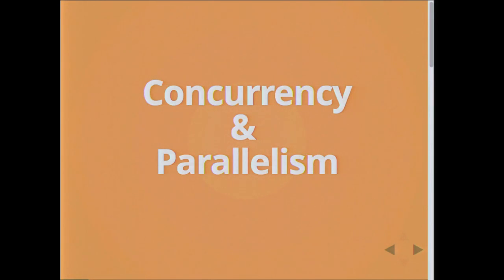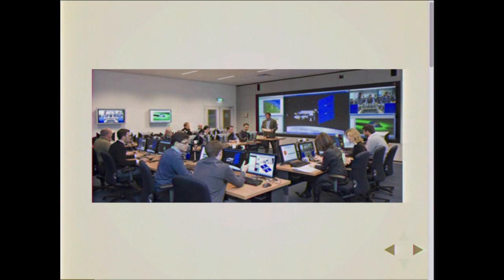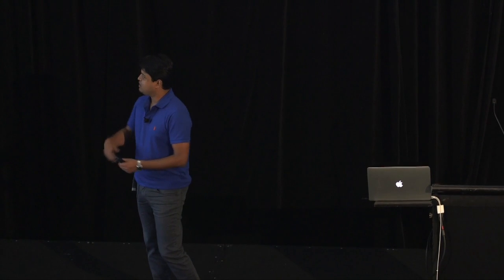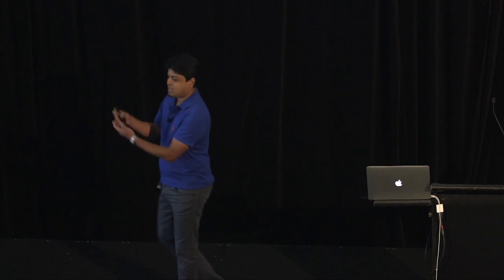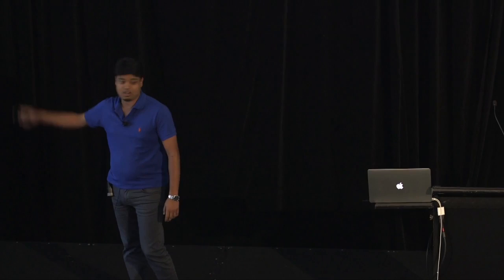So what's concurrency and what's parallelism? This example here is a concurrent system where the system is working towards a common goal, but there are individuals and groups doing their own individual stuff — everything is working at the same time, but the system as a whole is going towards a common goal. Whereas if you assume all these trains are leaving at exactly the same time going towards the same place, that's a parallel system where you have the same stuff being done in parallel over and over. Today we're mostly going to talk about concurrency.